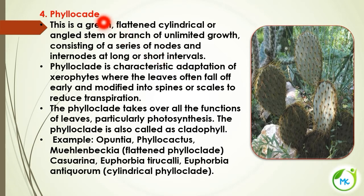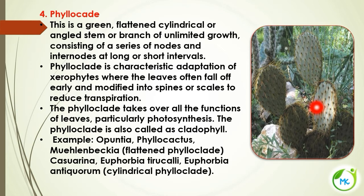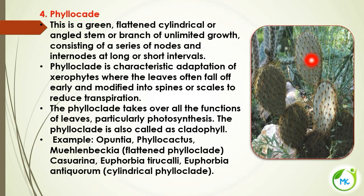The next aerial modification is phylloclade. It is a green, flattened, cylindrical or angled stem with unlimited growth. It consists of a series of nodes and internodes at long or short intervals. Phylloclade is the characteristic adaptation of xerophytes — plants growing under extreme dry habitats. In dry conditions, leaves fall and get modified into spines to reduce transpiration. In the absence of leaves, the phylloclade performs photosynthesis. It is also referred to as cladophyll. Example: Opuntia.